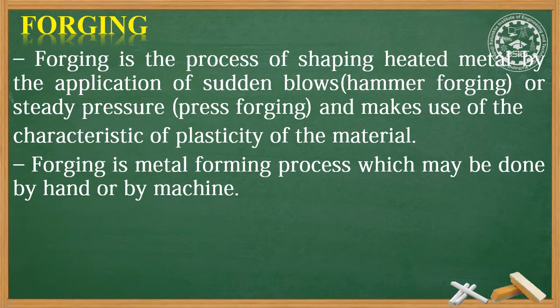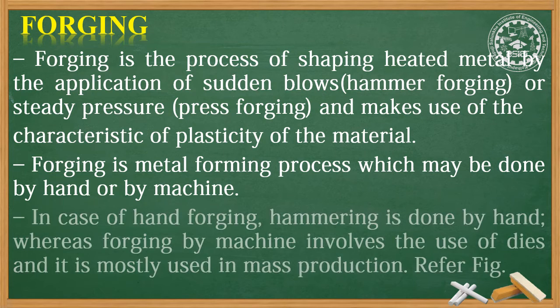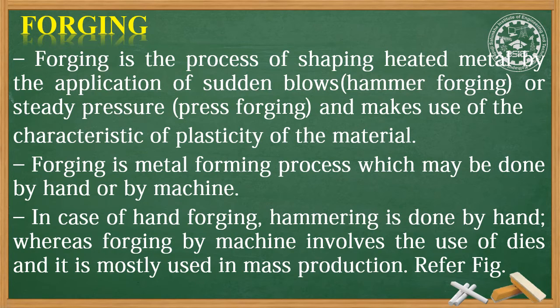Forging is a metal forming process which may be done by hand or by machine. In case of hand forging, hammering is done by hand, whereas forging by machine involves the use of dies and it is mostly used in mass production.